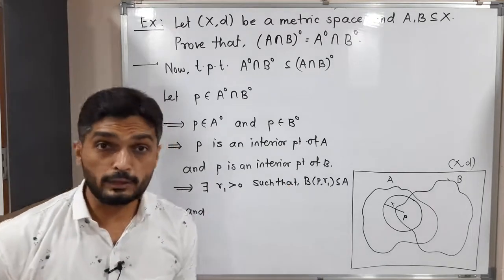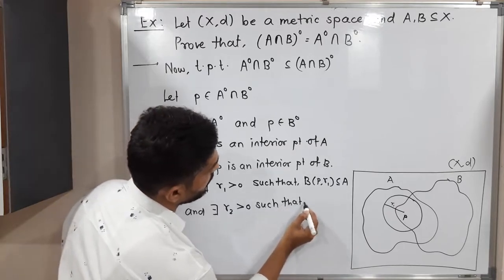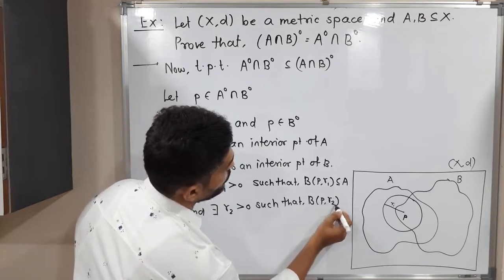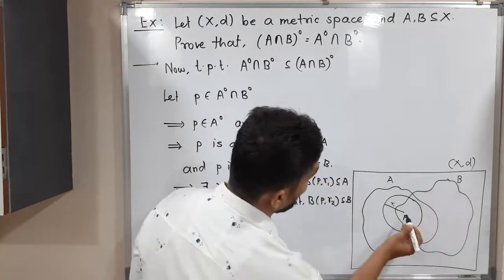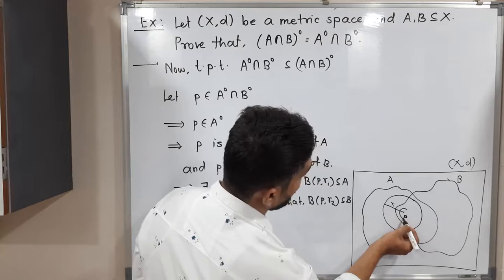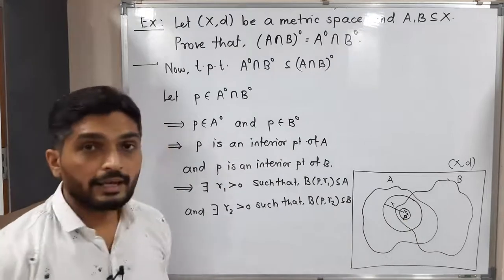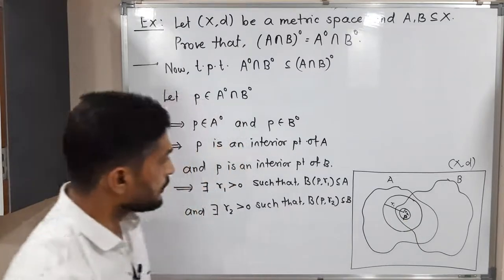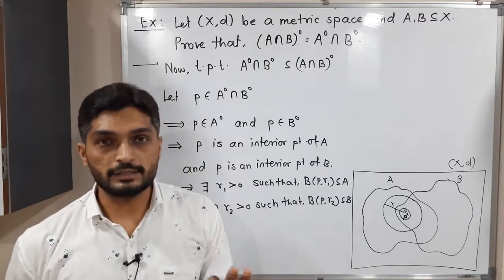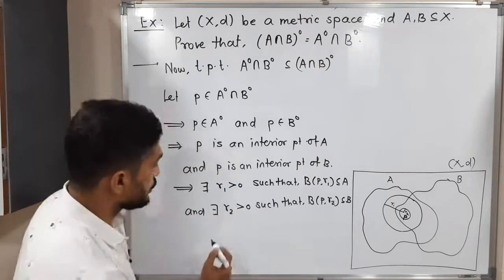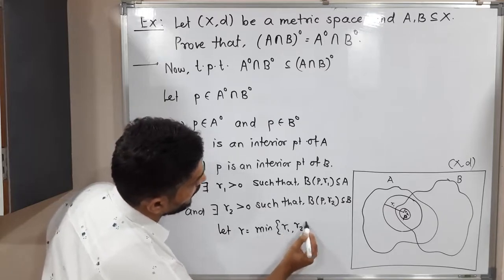Since P is an interior point of B as well, there exists R2 greater than 0 such that the open ball with center P and radius R2 is a subset of B. In the diagram, P is very close to the boundary of B, so we take a smaller radius so that ball lies entirely inside B. Now we want a ball that lies in both sets, so we take R equal to the minimum of R1 and R2.